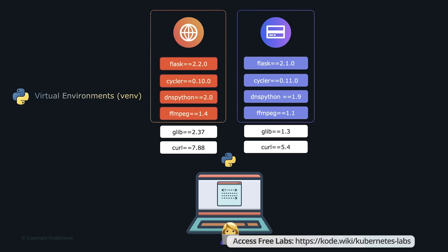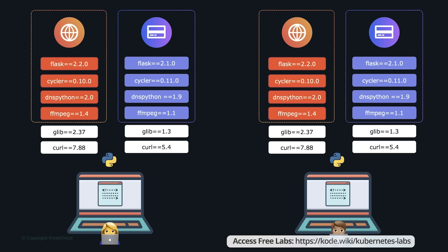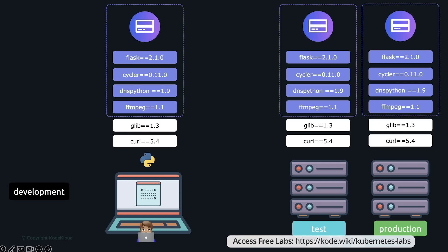If you bring in a friend to help develop the application, that person needs to set up the exact same environment with the exact same versions of dependencies and libraries. If they use a completely different operating system, a whole different nightmare awaits. What happens when the application is deployed to a test or production environment? You'll have to make sure you set up those environments in the exact same way. If you change something in development, you must update test and prod as well. Otherwise, things end up working in one environment and not the other.